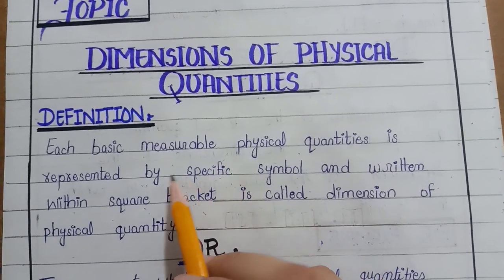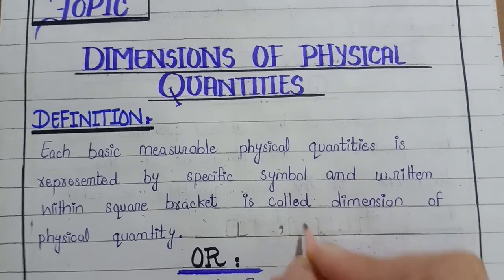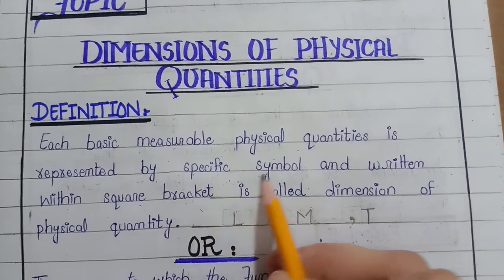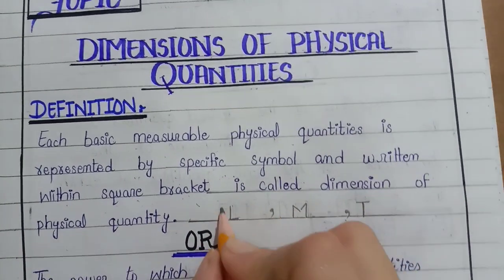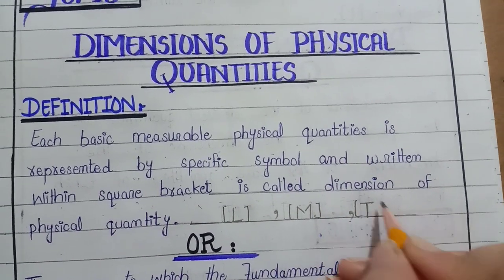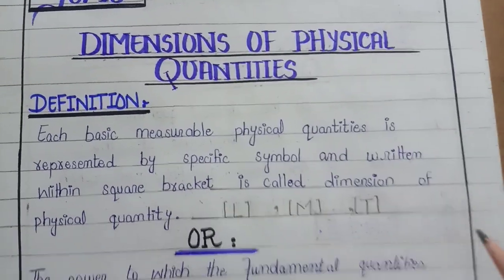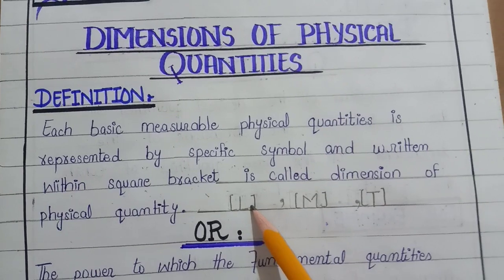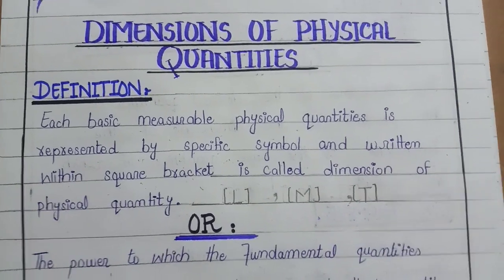We represent physical quantities with specific symbols. For example, we represent length with the symbol L. When we write these symbols — like length, mass, time — inside a square bracket, those become the dimensions of physical quantities. So the concept is: whenever you have measurable or physical quantities, you write their specific symbols in a square bracket, and what you get are the dimensions of those physical quantities.